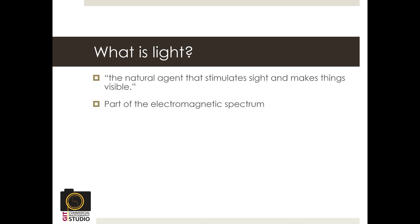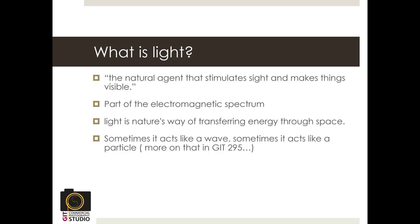Light is energy — electromagnetic radiation, specifically. What we consider visible light is just one part of the spectrum. There's also infrared, ultraviolet, radio waves, microwaves, x-rays — those are all electromagnetic radiation, just not visible to us. We don't have cells in our eyes that can pick them up. An x-ray machine, for example, can sense that kind of light. Some wavelengths have more energy than others, and it all works the same way.